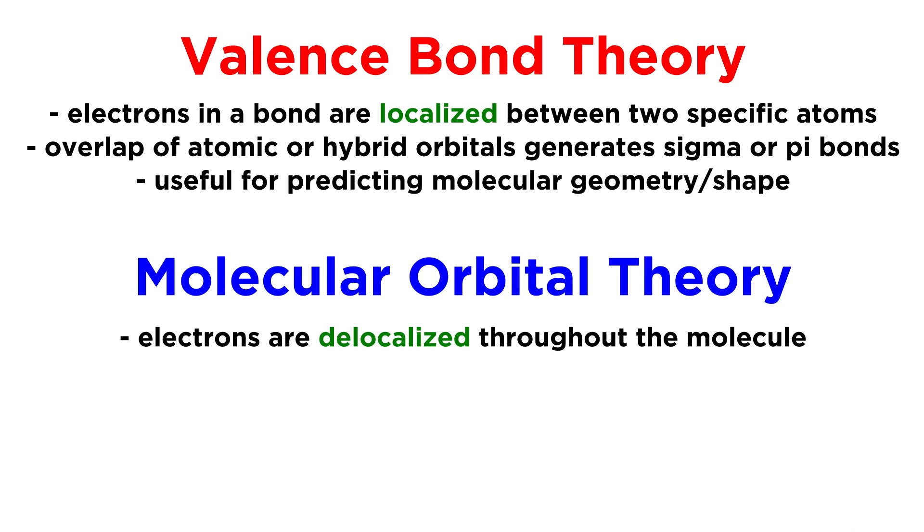Molecular orbital theory differs from valence bond theory in that electrons are considered delocalized throughout the molecule, and atomic orbitals combine to form molecular orbitals which are also delocalized throughout the molecule.